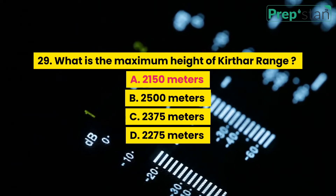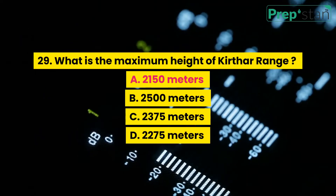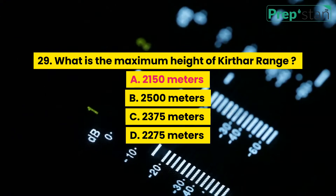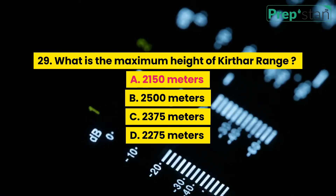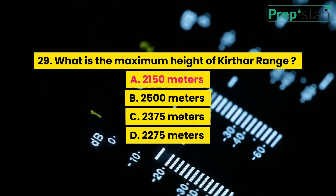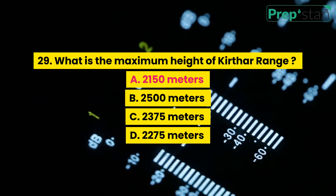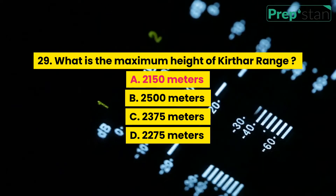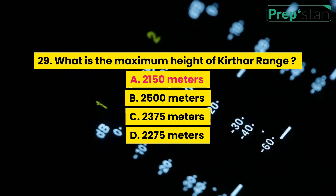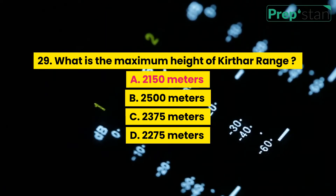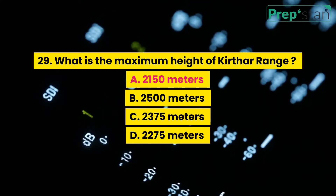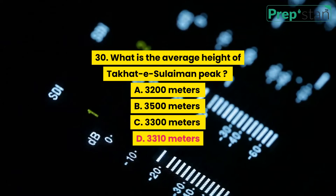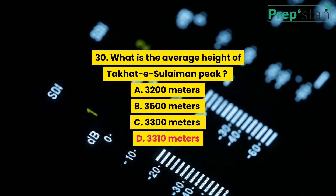Question 29: What is the maximum height of Kirthar range? A. 2,150 meters, B. 2,500 meters, C. 2,375 meters, D. 2,275 meters.